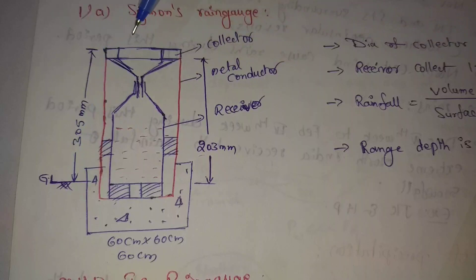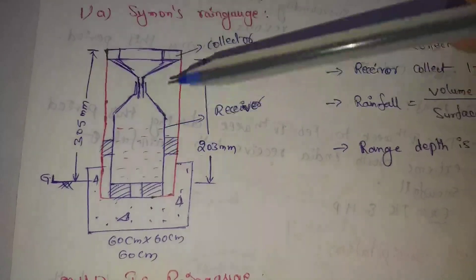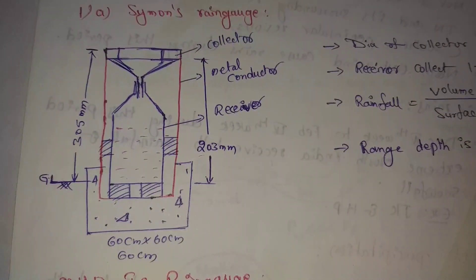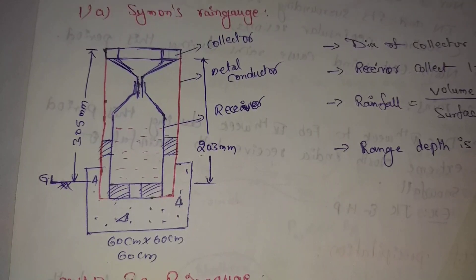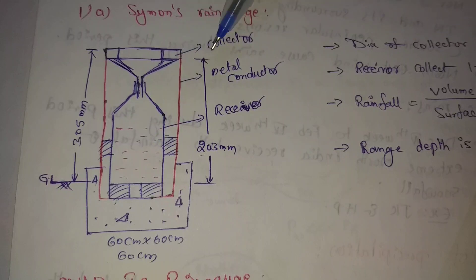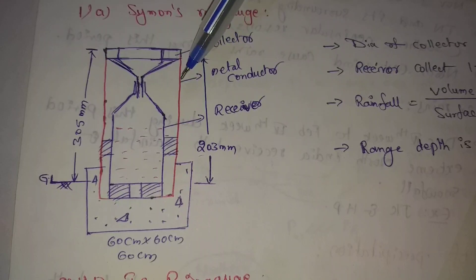Above the ground level, the total structure is 305 mm above ground and the receiver height is 303 mm. If you want to lay down the pipe, it is a funnel. The funnel and the collector are black, and the receiver has four lines so it can be removed.